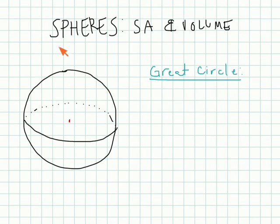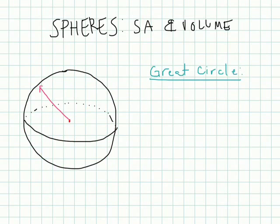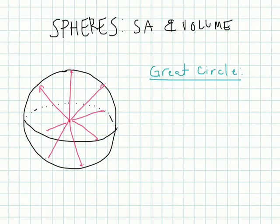The first would just be: how do we define a sphere? It's really the relationship between the center and all the points around it. A sphere is all the points that are equidistant from a given point called the center. So from this center point, no matter what part of the sphere you're touching — here's a point, here's a point, here's a point on the back side and on the front — all these points are equidistant, the same distance from the center.